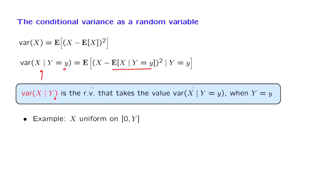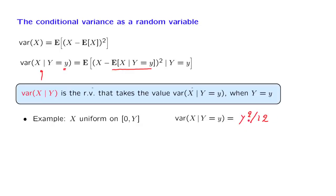Let us look at an example to make this more concrete. Suppose that Y is a random variable. We draw that random variable, and we're told that conditioned on the value of that random variable, X is going to be uniform on the interval from 0 to Y. So if capital Y takes on a specific numerical value little y, then X is uniform on the interval from 0 to little y. A random variable that's uniform on an interval of length little y has a variance of y squared over 12. So this is an equality between numbers — for any specific value of little y, this is the numerical value of the conditional variance.